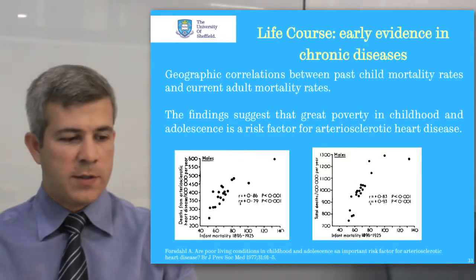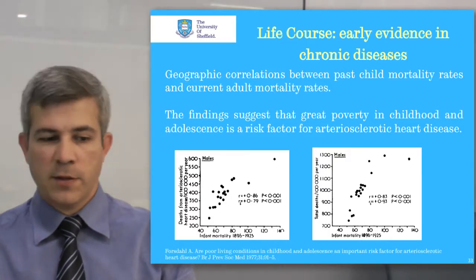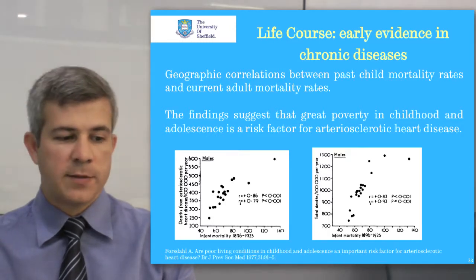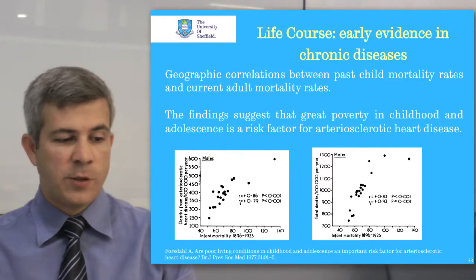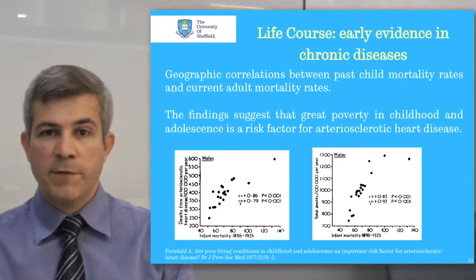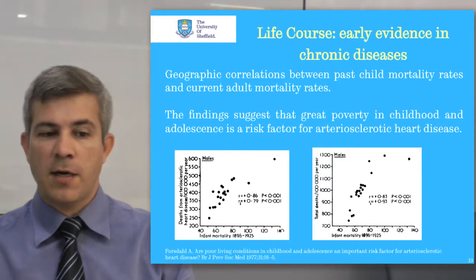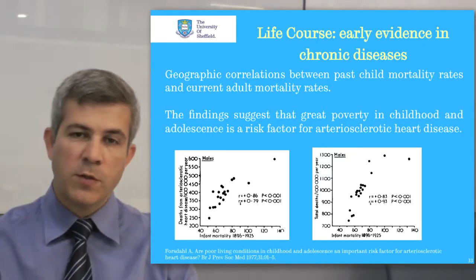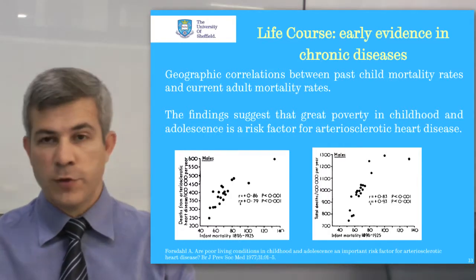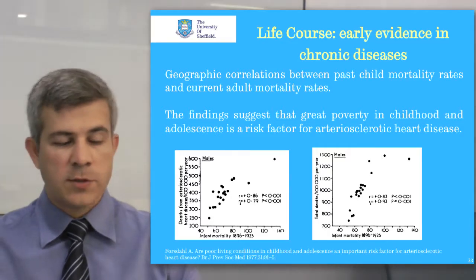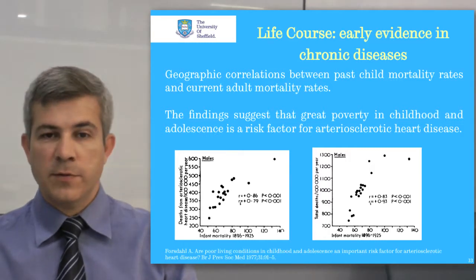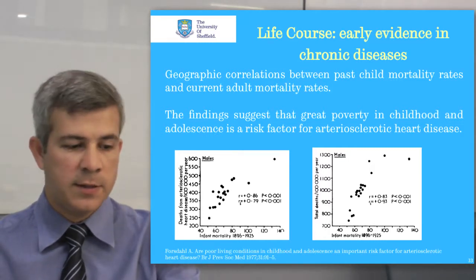Early evidence on the life course approach came from the geographic correlations between past child mortality rates and current adult mortality rates in Norway. The findings suggest that great poverty in childhood and adolescence followed by prosperity is a risk factor for atherosclerotic heart disease. Poor living conditions in early years leads to a weaker cohort of children, and those who survive carry with them a lifelong vulnerability resulting in high death rates in adulthood.